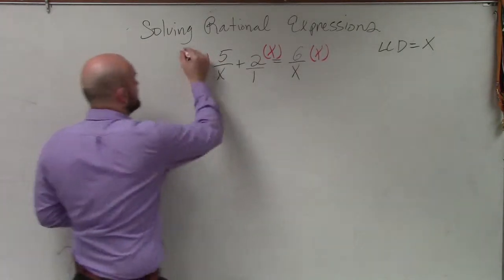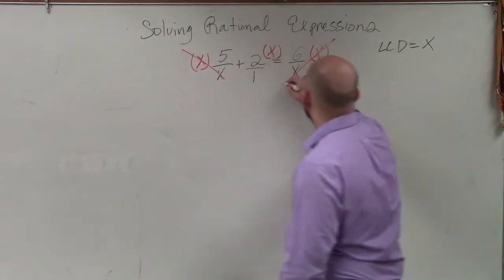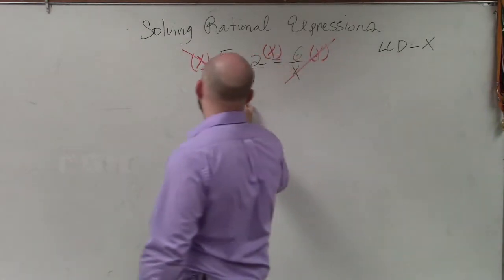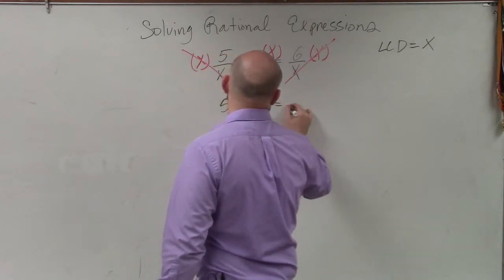Now what's nice about this is since we're multiplying everything by x, those divide, and those divide to 1. So therefore, I'm just left with 5 plus 2x equals 6.